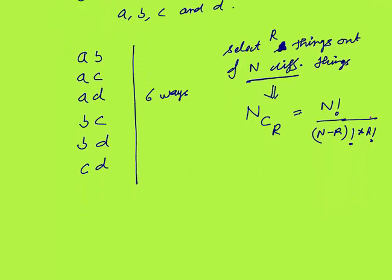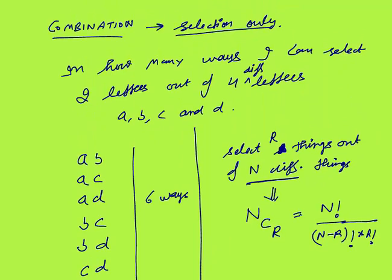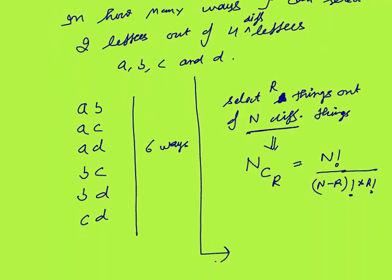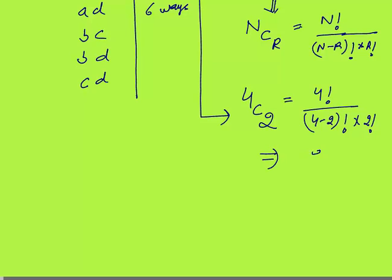In our case, we had 4 different letters and I need to select 2 letters. So the formula would be 4C2, that is 4 factorial upon 4 minus 2 factorial into 2 factorial. This equals 24 upon 2 factorial into 2 factorial, which is 24 upon 4. So the answer is 6.